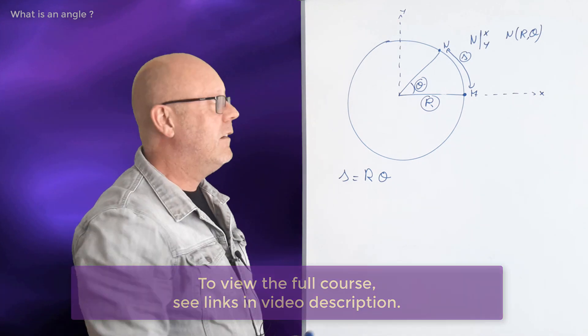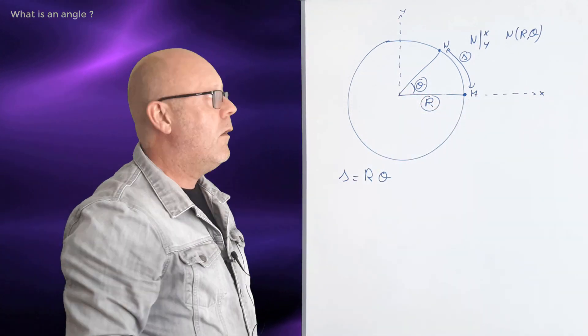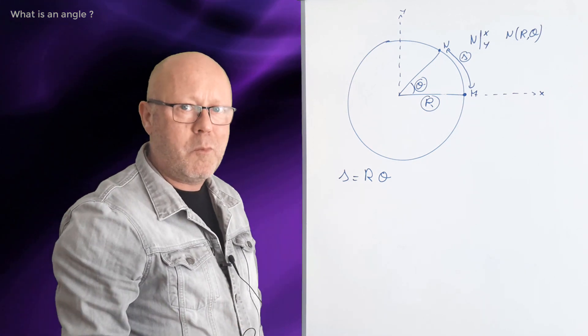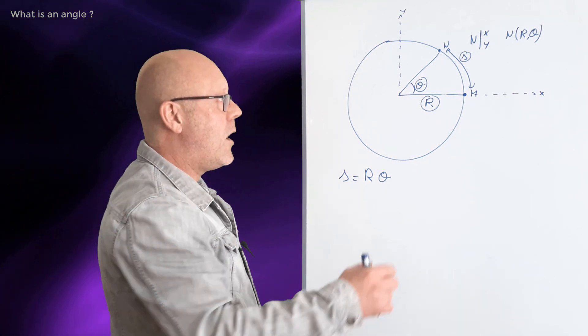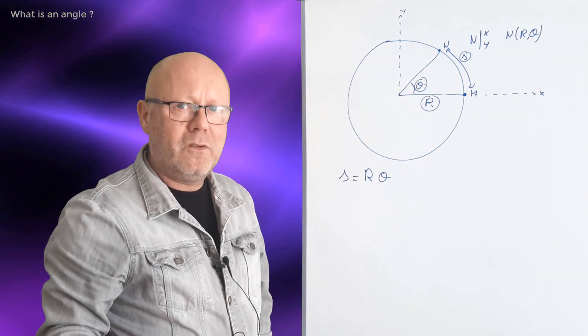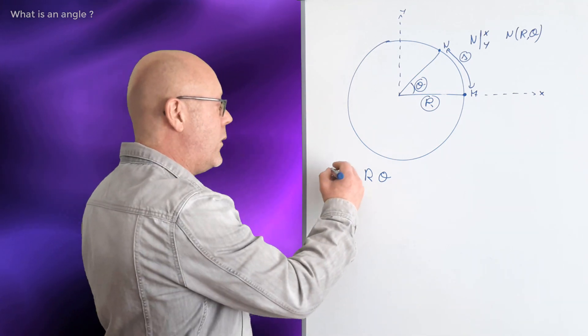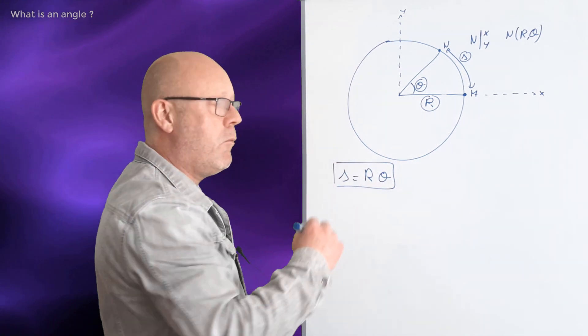Think about it. If I increase the radius and I keep theta constant, what happens to the arc? Well, it increases proportionally. Now, if I fix the radius and I increase the angle, what happens to the arc? Well, it increases also proportionally. That's why we have s equals r theta, a very important relation.